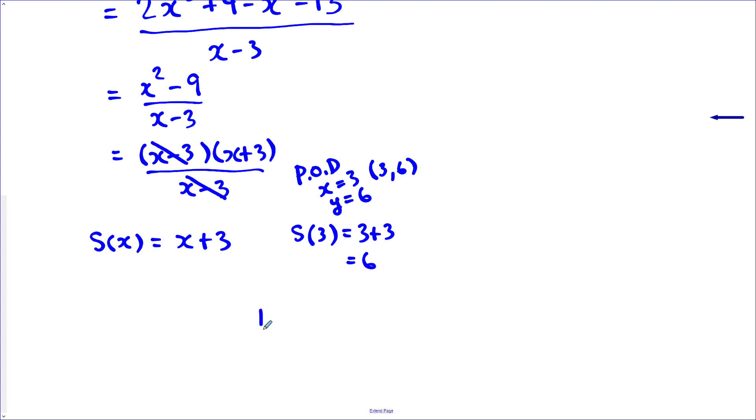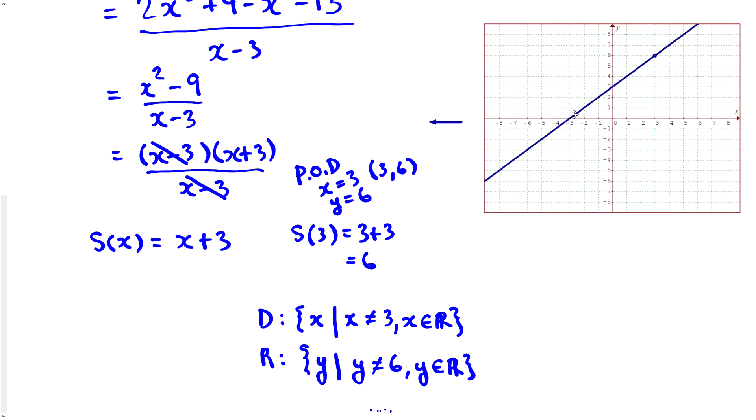So when we do our domain and range, we could say x is such that x cannot equal 3, but it can be any other real number. We look at this. This is very nice. It's a slope y-intercept form and it's just a linear line with a hole in it. If we look at the graph, sure enough, that's how it looks.